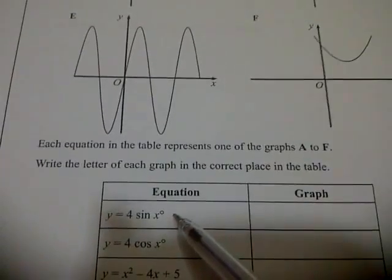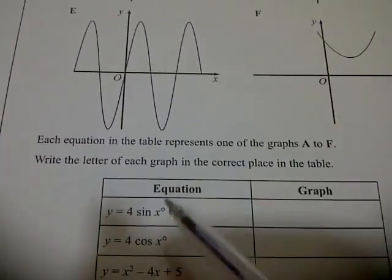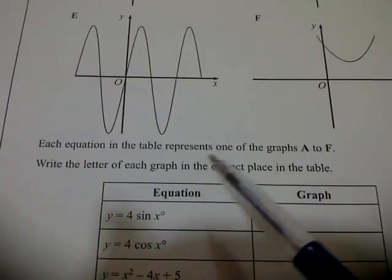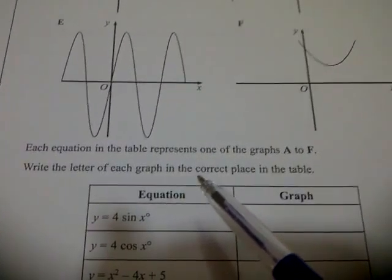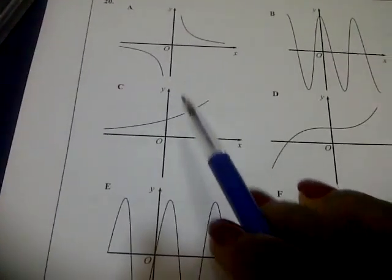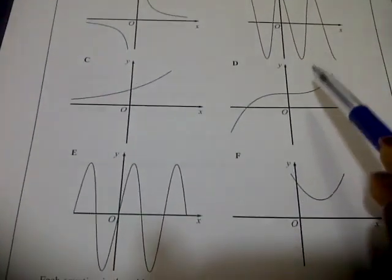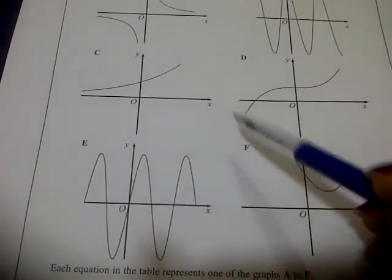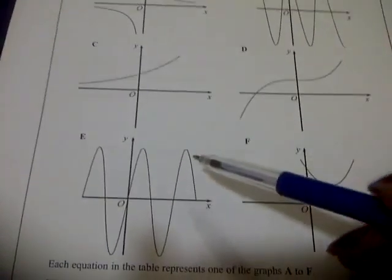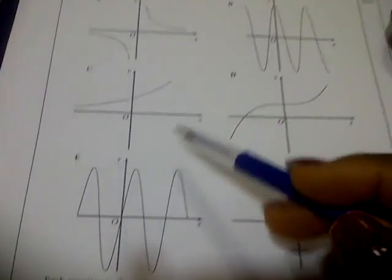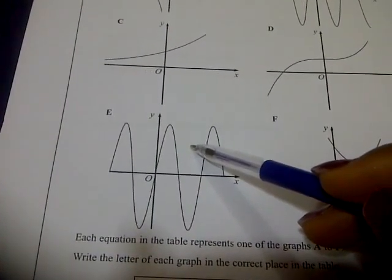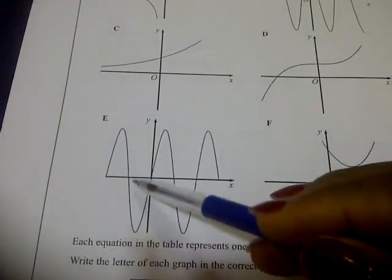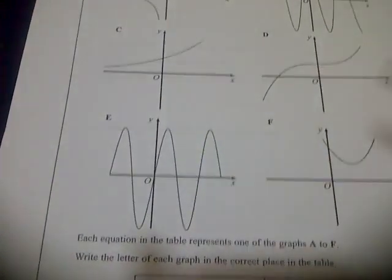Look for the one that has amplitude of 4 and then is leading, because sin x is always leading. So from here, this one is completely not it, this one is completely not it, just this and this. And it's sinusoidal, we look for sinusoidal because it's sine waveform. So you can see that this is lagging and this is leading, so it has to be E. It's leading and it has amplitude, so it's E.